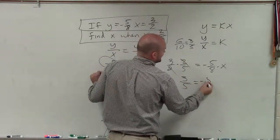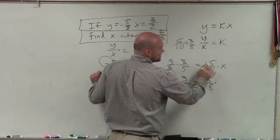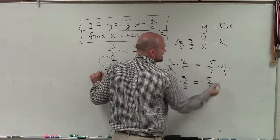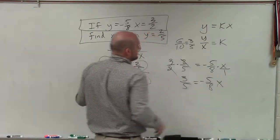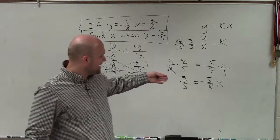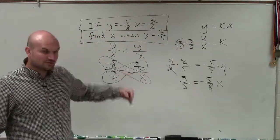Anyways, that's equal to negative 5 eighths times x. Now, what we have is we have x times negative 5 eighths equals 3 fifths.